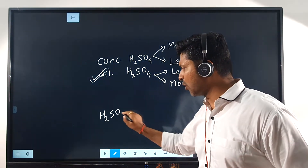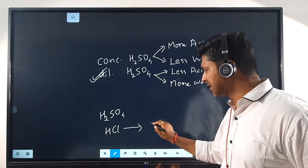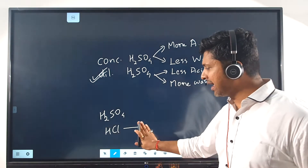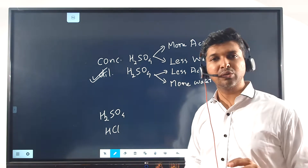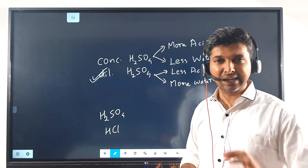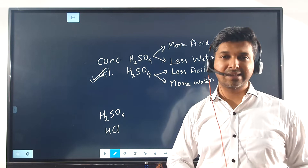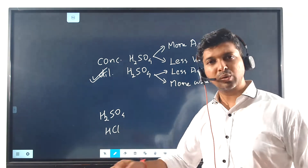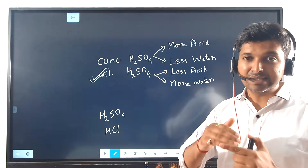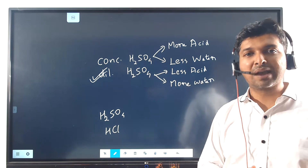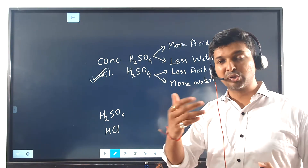Take H2SO4, or for that matter HCl — hydrogen chloride. If you ask me whether pure hydrogen chloride is acidic, I will say at the moment it is not acidic. It has the potential to become acidic, but right now in its pure form it is not acidic.